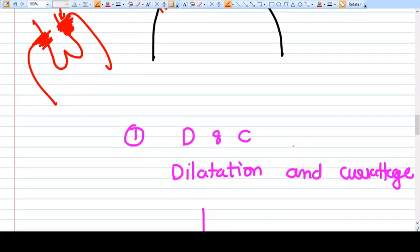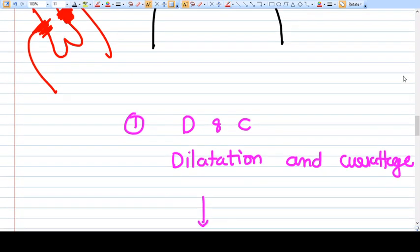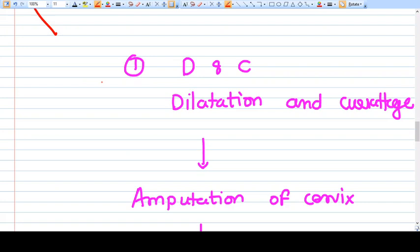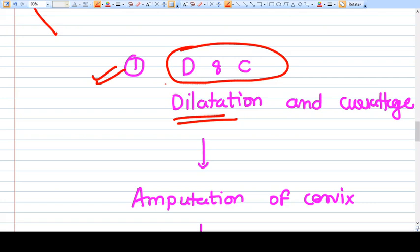What we do in this surgery exactly? We perform a primary dilatation and curettage before doing anything. Why we do this thing? We just want to remove defective endometrium.